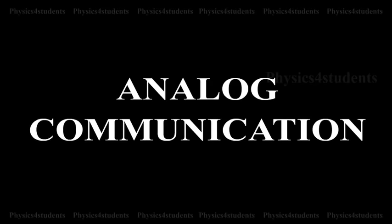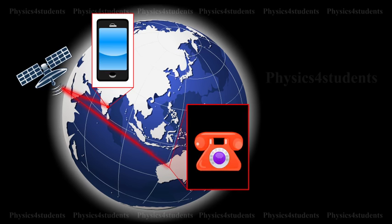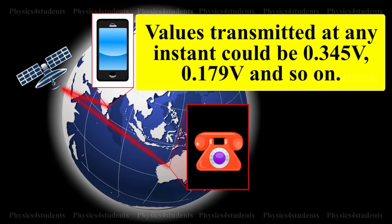In Analog Communication, analog signals are used. An analog signal is a continuously varying voltage or current. Traditionally, in telephone and radio systems, the messages consisted of information conveyed by voice. The voice signal is an analog signal and so could take on any value within the overall range allowed. For example, if the telephone system were set up to handle voice signals ranging from 0 to 1 volt, the values transmitted at any instant could be 0.345 volts, 0.179 volts, and so on. This is called Analog Signal Communication because the signal can be any value within the range.